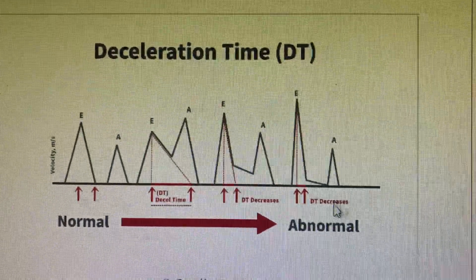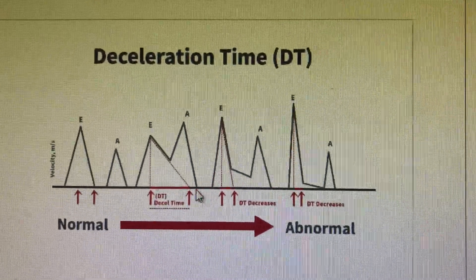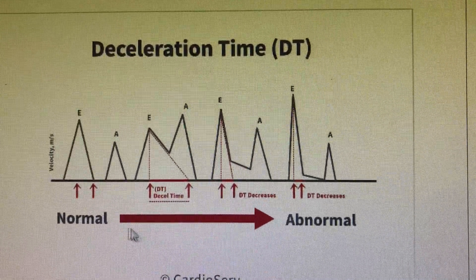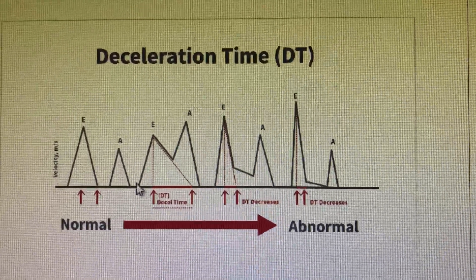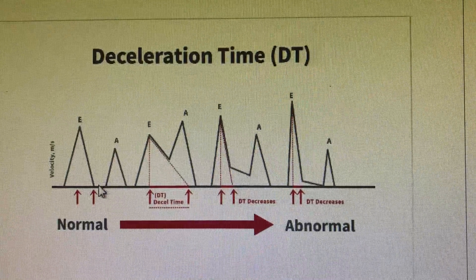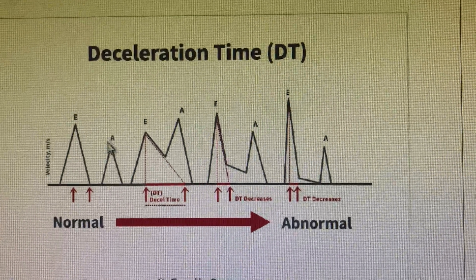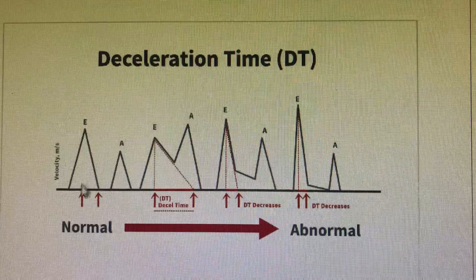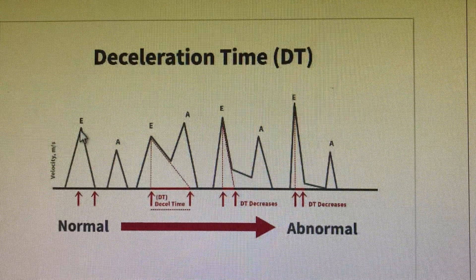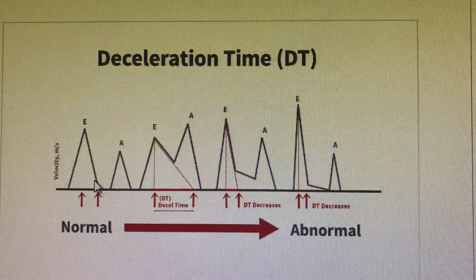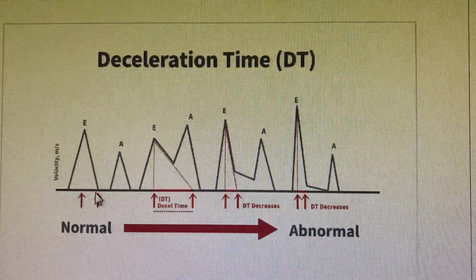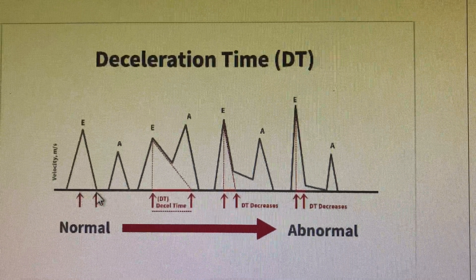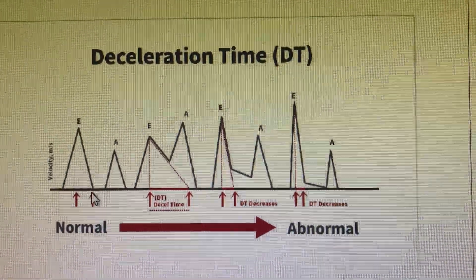Another thing we measure in diastolic dysfunction is the deceleration time, which is very important. You can see that the normal pattern has the E velocity and the A velocity. The deceleration time is the time taken from the peak of the E wave for it to come down to baseline — that is the time from the middle of the E wave to the end of the E wave.